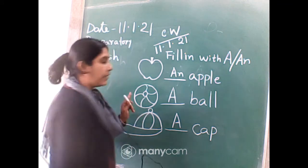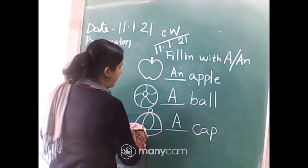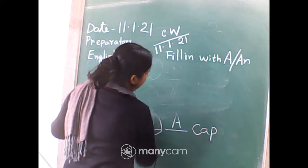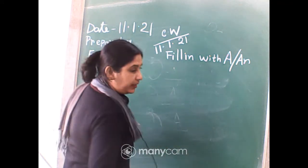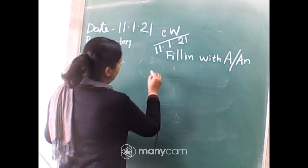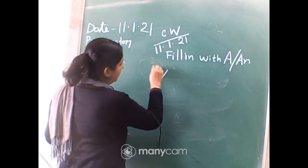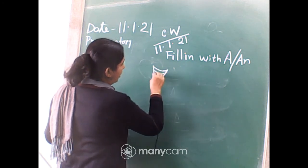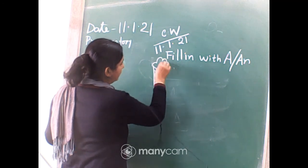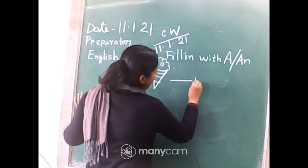Write this one also in your copy. I will erase the board and give you another work. Make a cone like this — this is your cornetto cone and it will be ice cream. Dash ice cream.